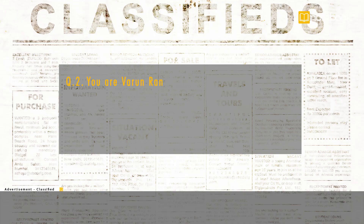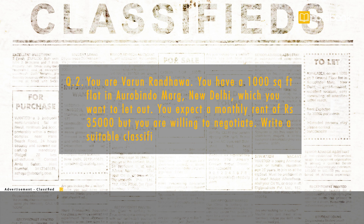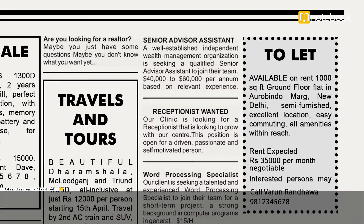You are Varun Randhava. You have a thousand square feet flat in Aurobindo Marg, New Delhi, which you want to let out. You expect a monthly rent of Rs. 35,000 but you are willing to negotiate. Write a suitable classified advertisement to let.